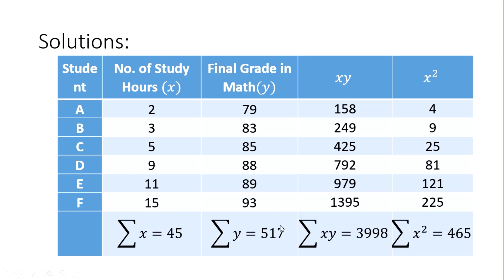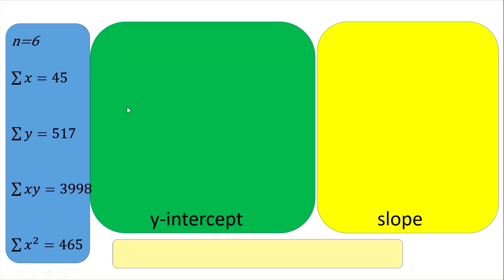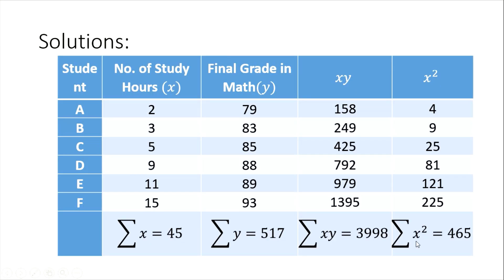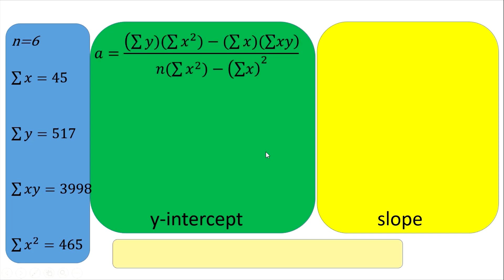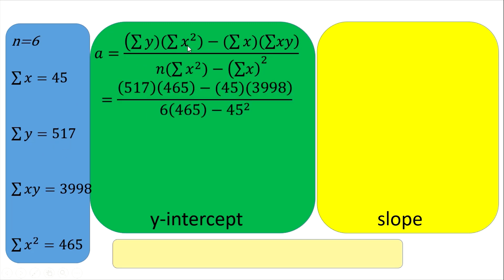The sum of the y column is 517, the sum of the xy column is 3998, and the sum of the x squared column is 465. Now let's compute the y-intercept a. We have: summation of y is 517, summation of x squared is 465, summation of x is 45, and summation of xy is 3998. On the denominator, n equals 6 and summation of x squared is 465.